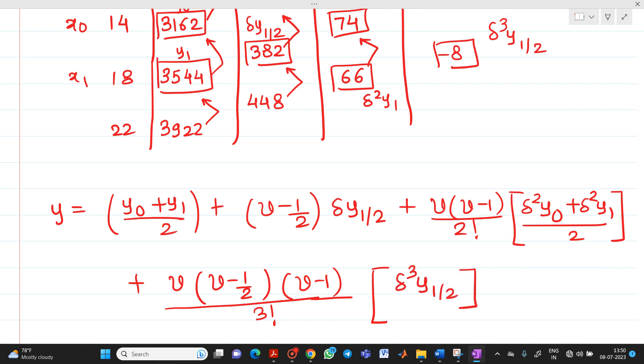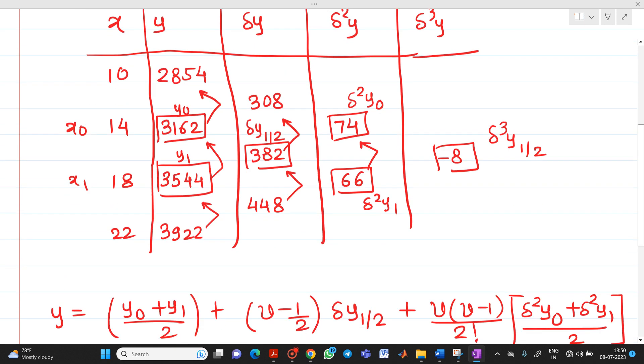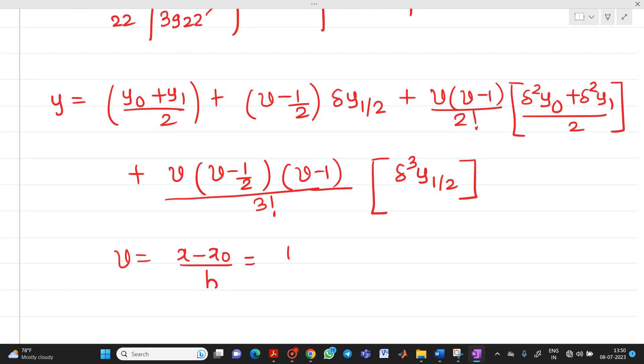So you know all these things. What is v? v equals x minus x0 divided by h. Here we have to find out what is the value of y15. So here we will have 15 minus this x0, which will be x0 equals 14, and h is nothing but step size which is x1 minus x0. So here you will get it as 4.